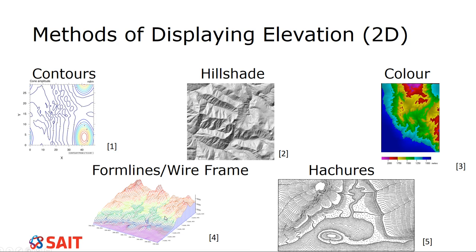Form lines is a very common engineering way of dealing with elevation. It uses straight lines — you'll often see TINs, which is a triangular network, with a whole bunch of triangles. In contours everything is rounded and curvy, but in form lines it is meant to be straight lines. The reason is that in engineering applications we're often dealing with man-made items, so we need straight lines because it's easier to cut and fill a straight line.